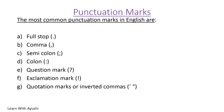The most common punctuation marks in English are full stop, comma, semicolon, colon, question mark, exclamation mark, and quotation marks or inverted commas. These are each mark and their symbols: full stop, comma, semicolon, colon, question mark, exclamation mark, and quotation marks or inverted commas.